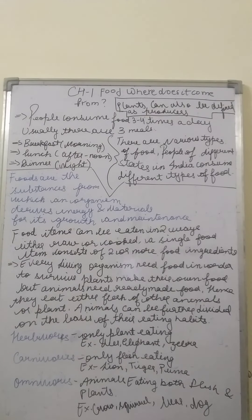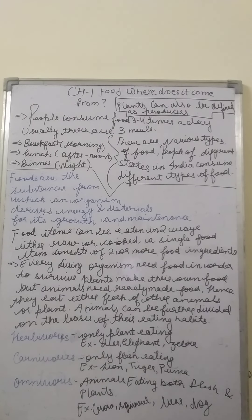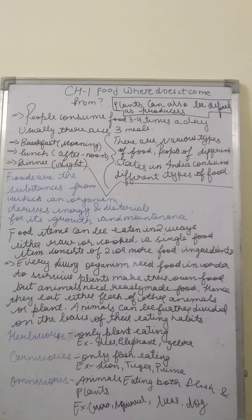Similarly, people living in different states of India have different food habits. People also have food habits, not just animals. This totally depends upon the climate and location. Like Kerala is near the coast, so there is plenty of water, and rice is produced in large amounts there. This is how the type of food depends upon location.